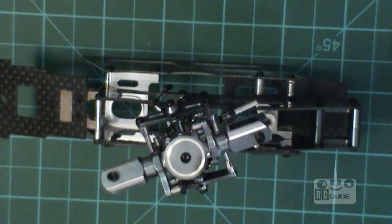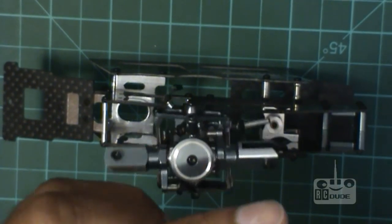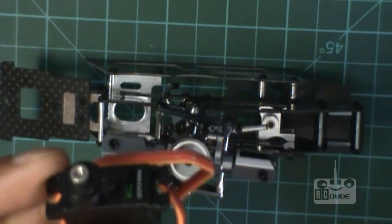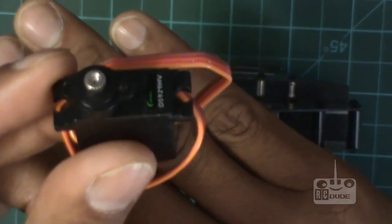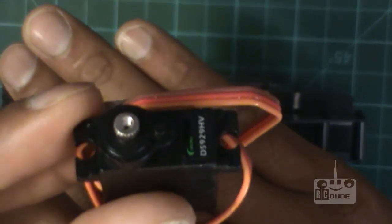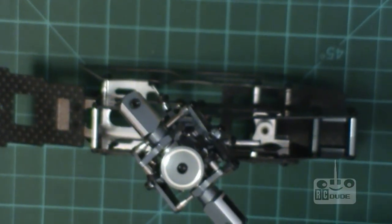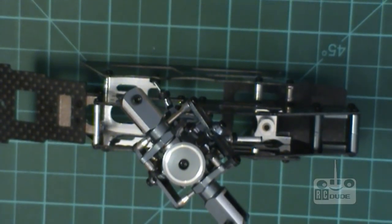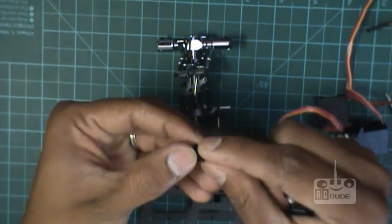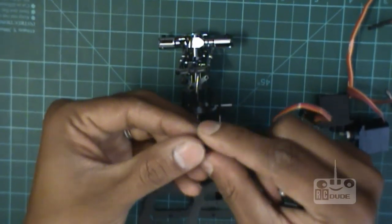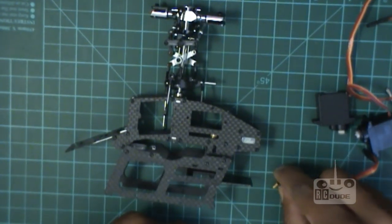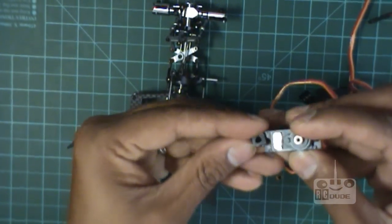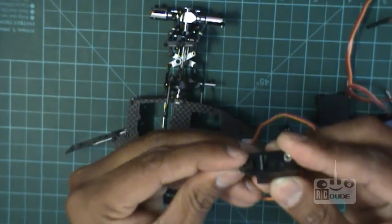Take your servo. I'm using the Corona DS929HV. I got it, guys. This one I'm using, so let's start it. This one is just for the vibration, so it comes with the servo.